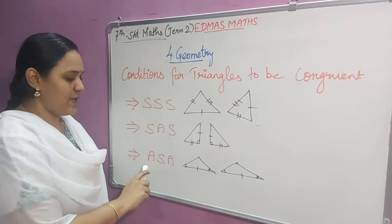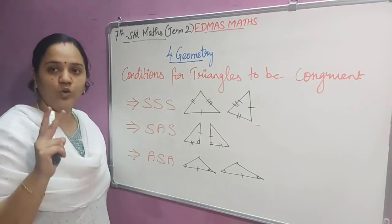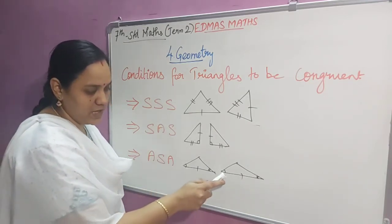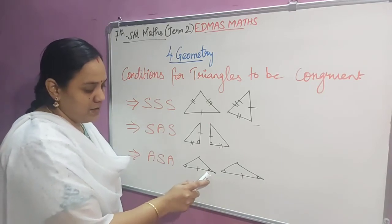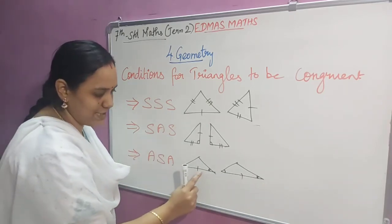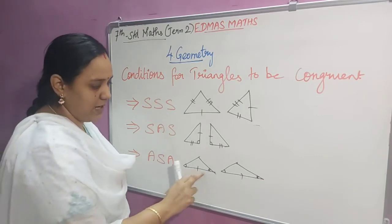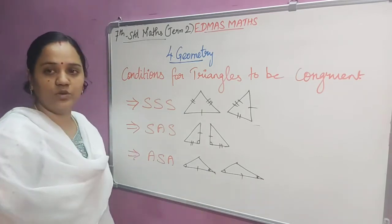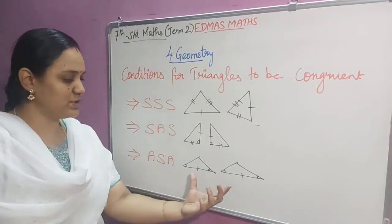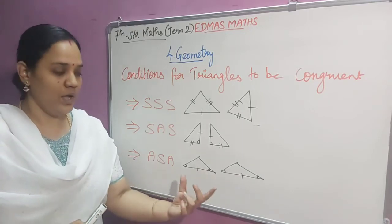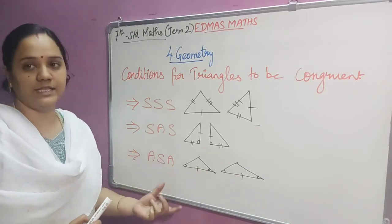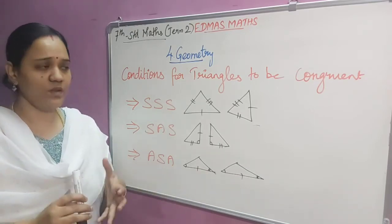The third condition is ASA — two angles and one side. Here this angle is equal to this angle, and this angle is equal to this angle, so two angles are equal. One side is marked with a single line, so these two sides are equal. We can say these two triangles are congruent to each other, satisfying the ASA condition.